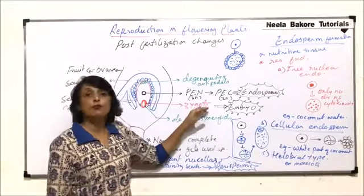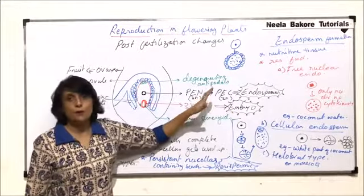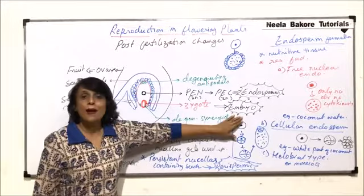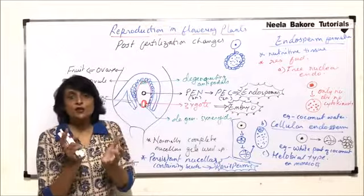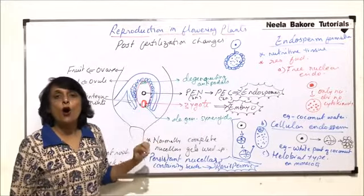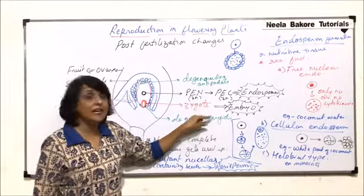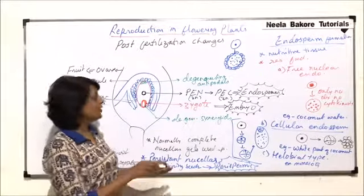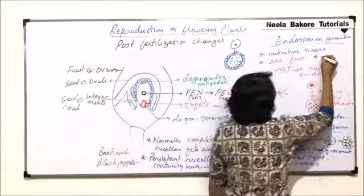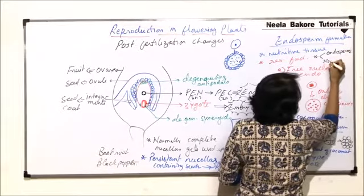Endosperm, as we said, is a nutritive tissue that supplies nourishment for the zygote developing into the embryo. In most cases, endosperm gets completely used up by the time the embryo is formed. Such seeds, where no endosperm remains, are termed non-endospermic seeds. But if endosperm persists in the seed after embryo formation, those are known as endospermic seeds. So based on presence or absence of endosperm, seeds can be endospermic or non-endospermic.